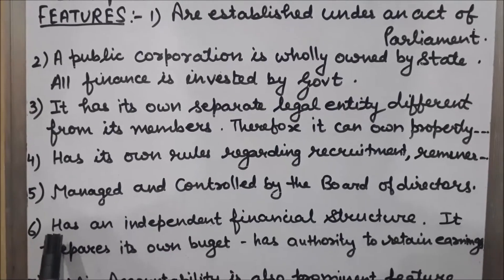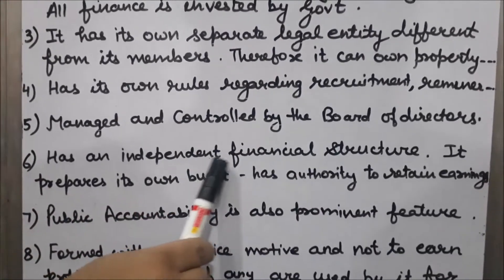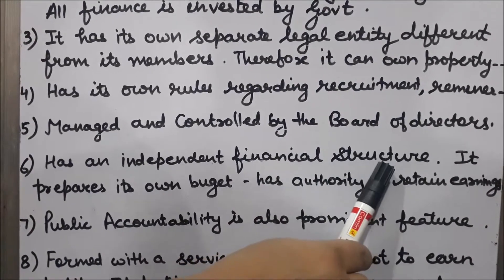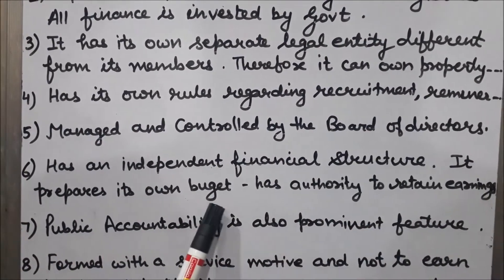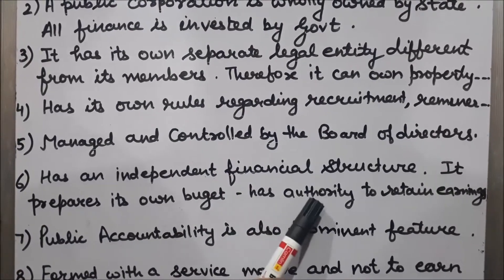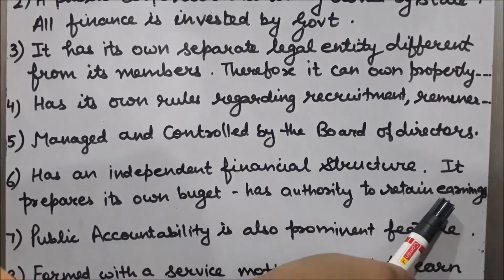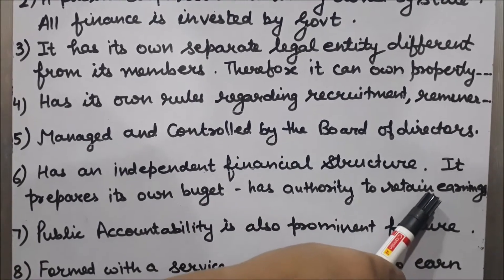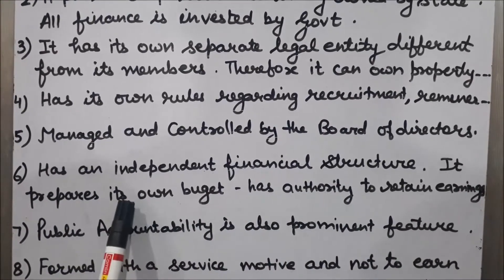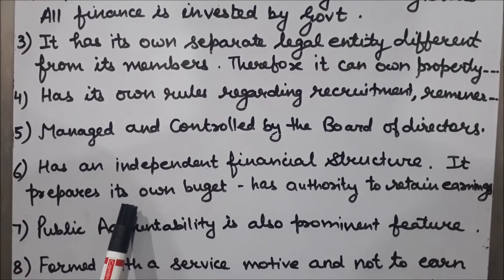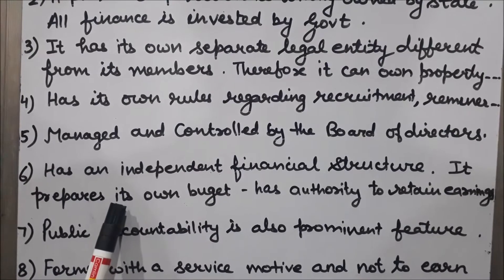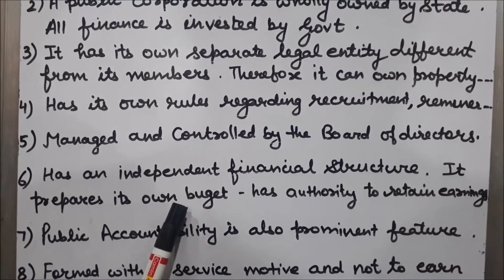The sixth feature is that statutory corporations have an independent financial structure. These corporations have their own financial structure; they prepare their own budget and have the authority to retain earnings. If required, they can utilize their profits for the benefit of the corporation. Although the government has a right over the earnings of the statutory corporation, these corporations can utilize their money for the benefit of their own operations if there is a need.